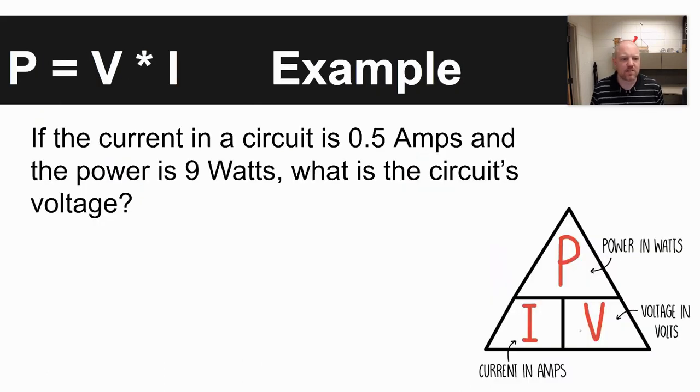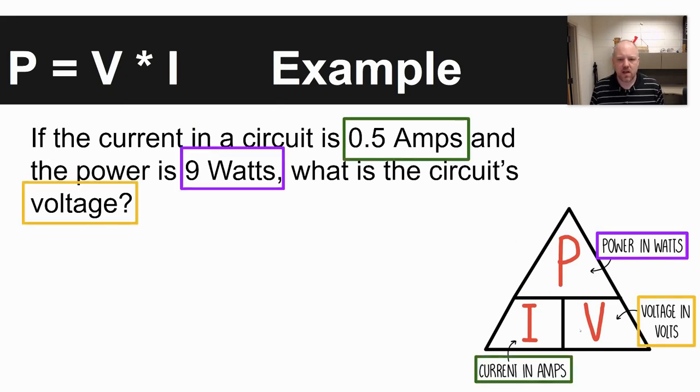An example problem says if the current in the circuit is 0.5 amps and the power is 9 watts, what is the circuit's voltage? What you need to do is just identify what you're given. We're given current in amps, 0.5 amps. We're given watts, which is a unit of power, 9 watts, and we're asked to solve for voltage.